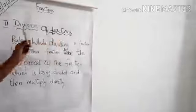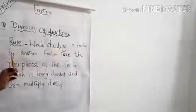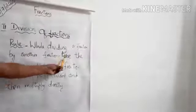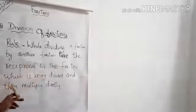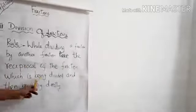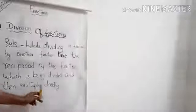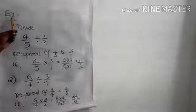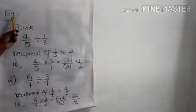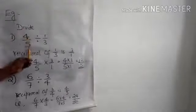Rule two — division of fractions. While dividing a fraction by another fraction, take the reciprocal of the fraction which is being divided, and then multiply directly. Now let us discuss the examples.